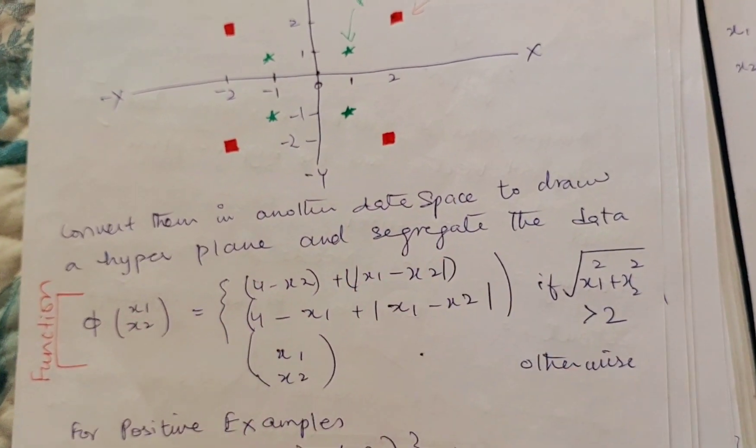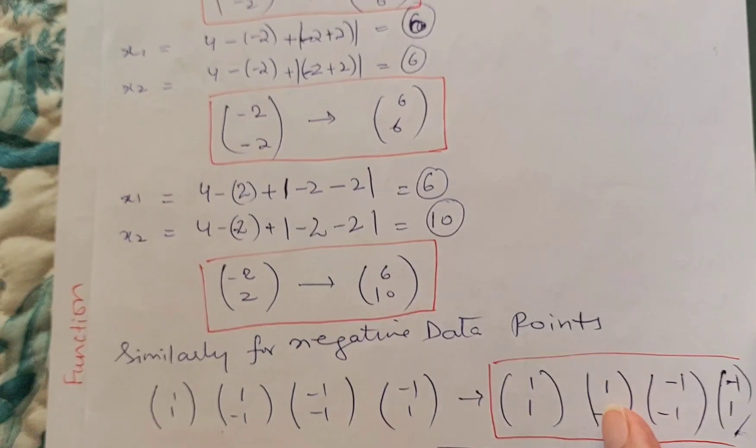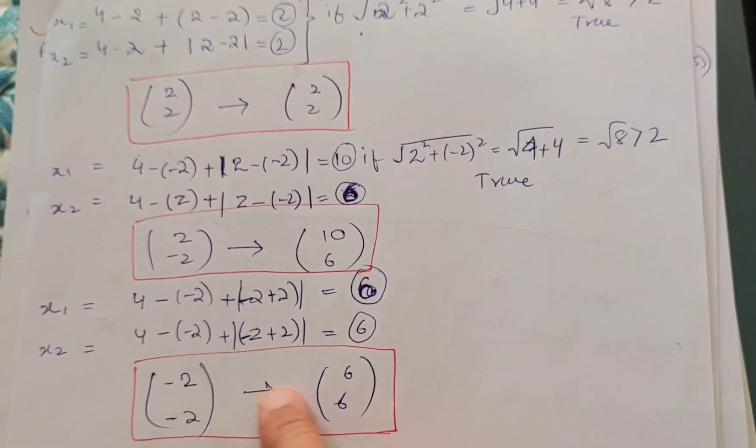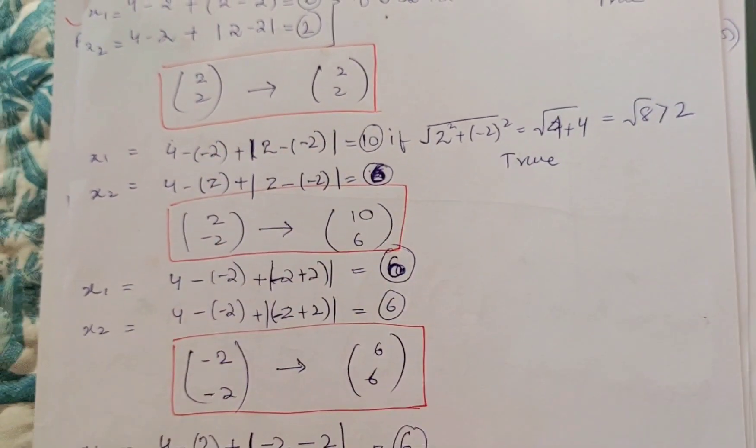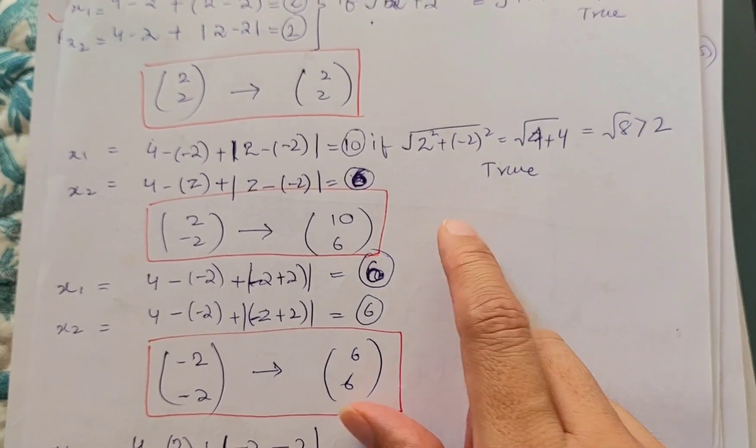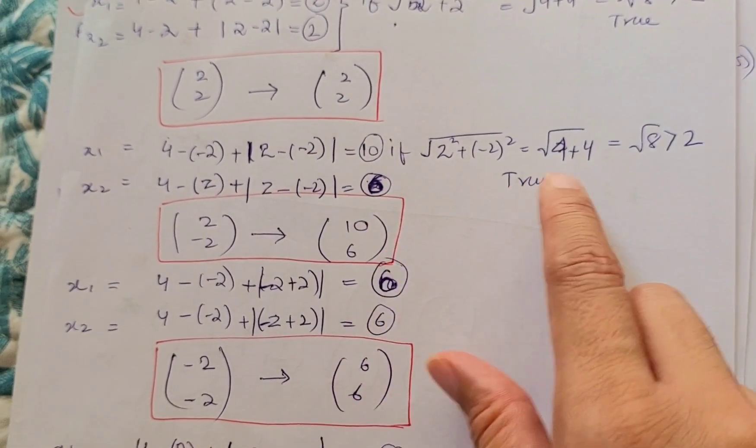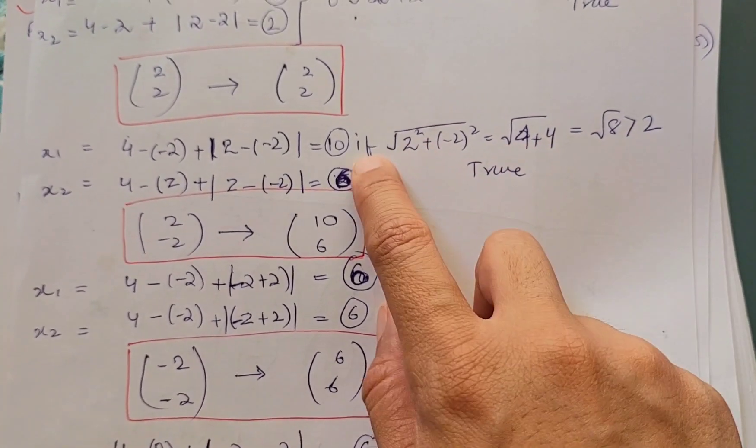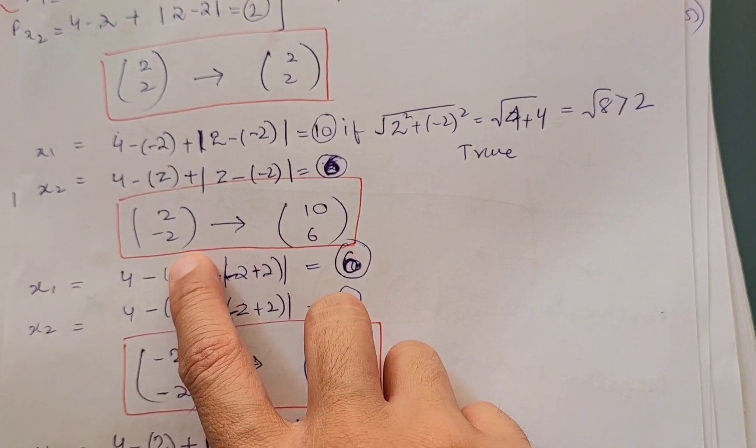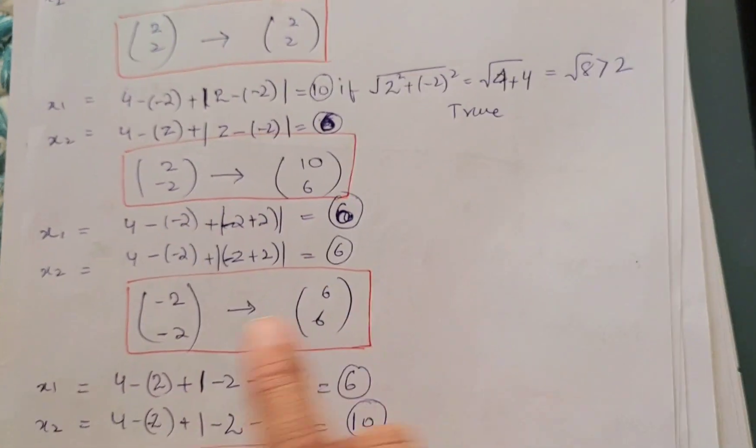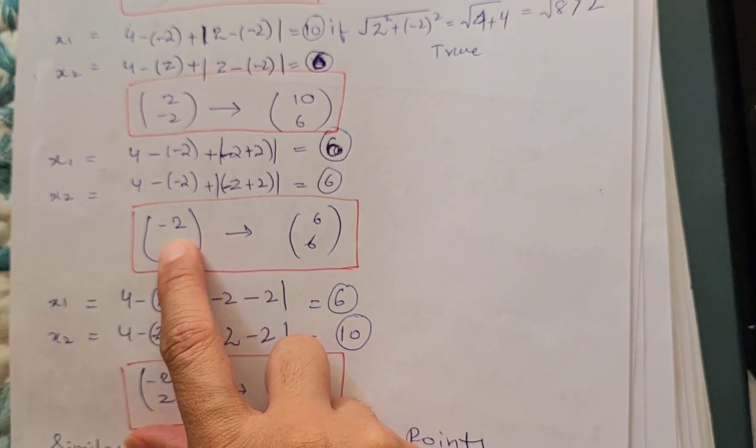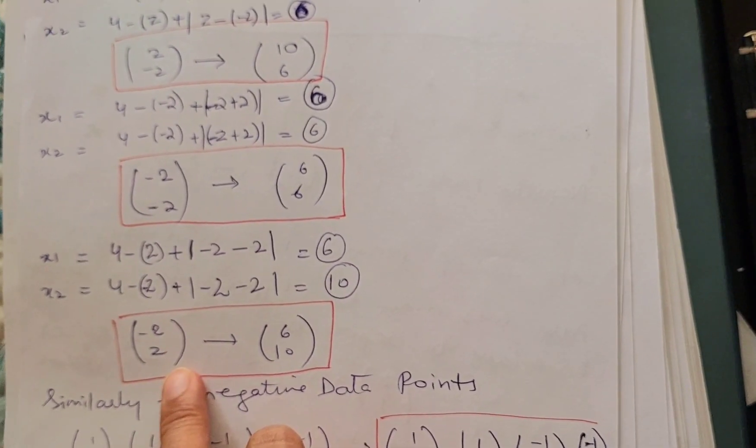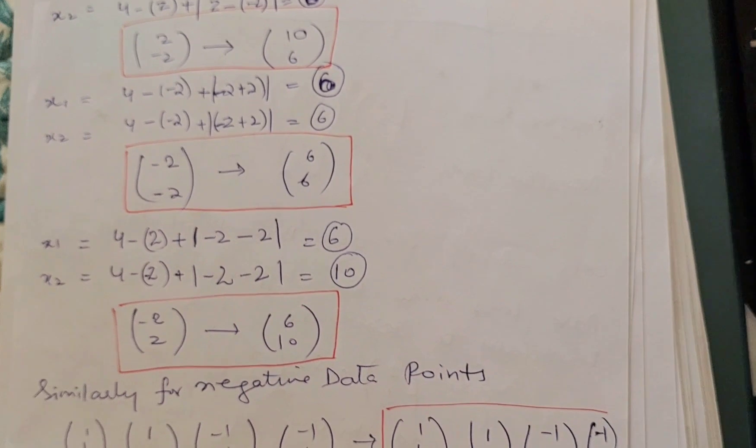Similarly, for the next data points, again I am placing the value of the next data points, which were 2 and -2, in this equation and I solved them. I'm getting answer 10 and 6. Again, the sum of these data points was larger than 2, that is why I have used this equation. So the data is transformed from (2, -2) into (10, 6). Similarly, the third data points are also transformed from (-2, -2) into (6, 6), and the fourth data points are also transformed from (-2, 2) into (6, 10).